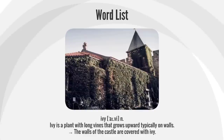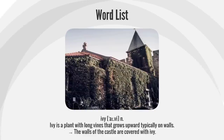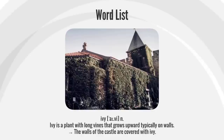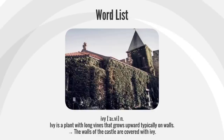Ivy. Ivy is a plant with long vines that grows upward, typically on walls. The walls of the castle are covered with ivy.